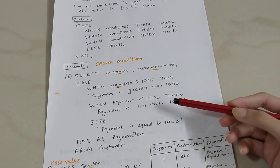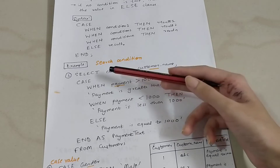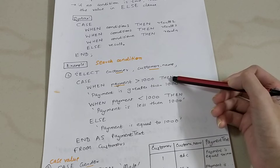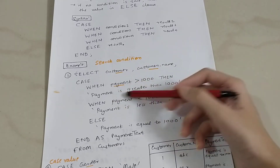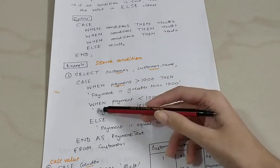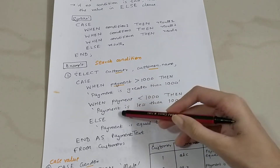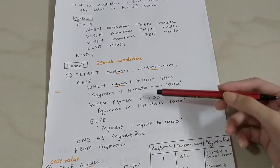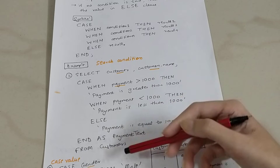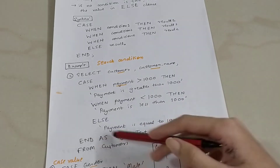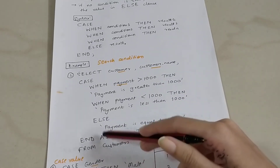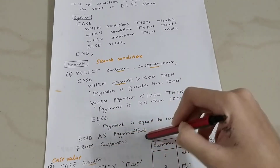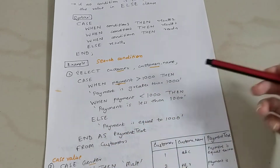Let's look at the first example. Here we have: SELECT customer, customer_name, CASE WHEN payment is greater than 1000 THEN 'payment is greater than 1000', WHEN payment is less than 1000 THEN 'payment is less than 1000', ELSE 'payment is equal to 1000' END AS payment_text. The alias AS payment_text gives a name to the CASE expression column.